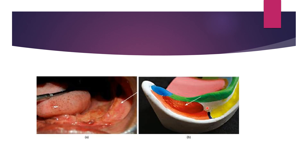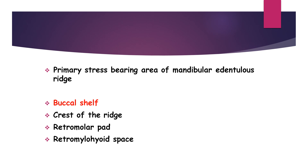Anteriorly the buccal shelf is bounded by the buccal frenum and distally by the retromolar pad. The buccal shelf lies at right angles to the vertical occlusal forces and is covered with good smooth cortical bone. The total width of this region actually becomes greater with bone resorption. Hence the buccal shelf area is considered the primary stress bearing area of the mandible and the answer is buccal shelf.